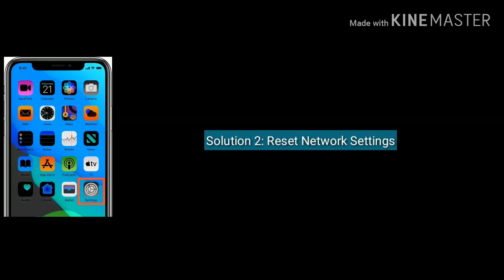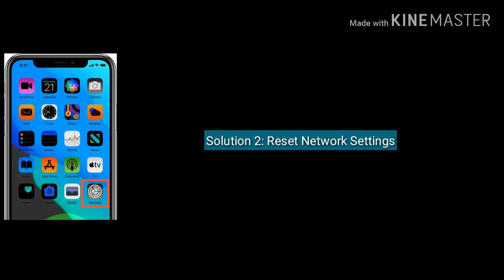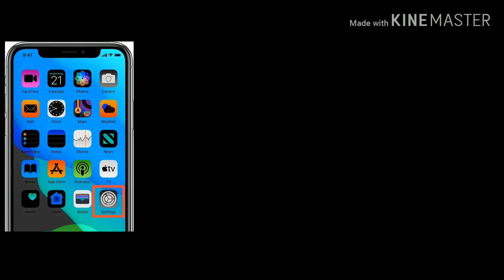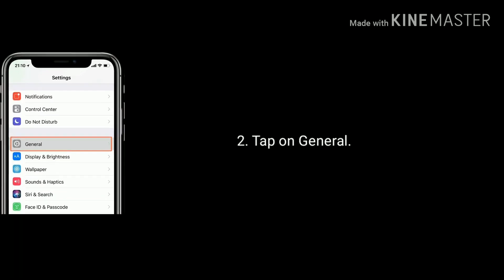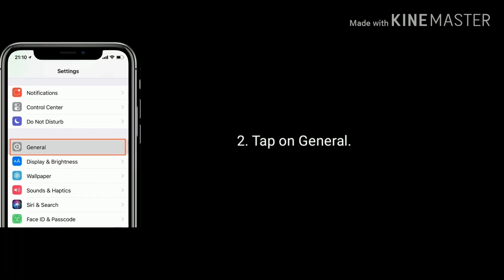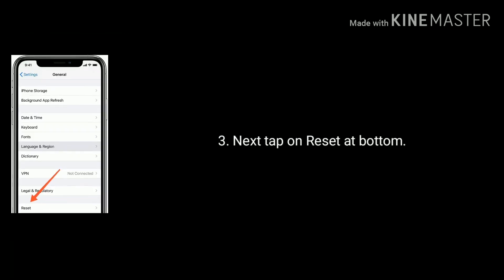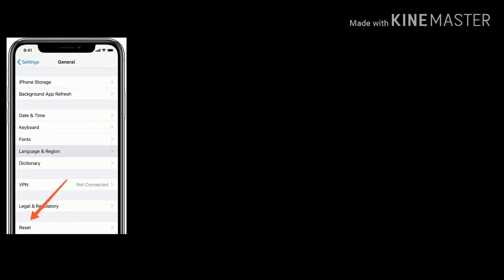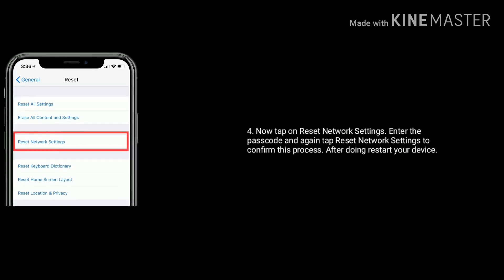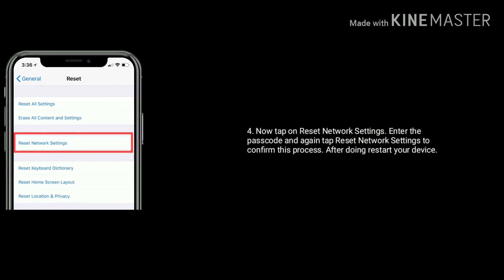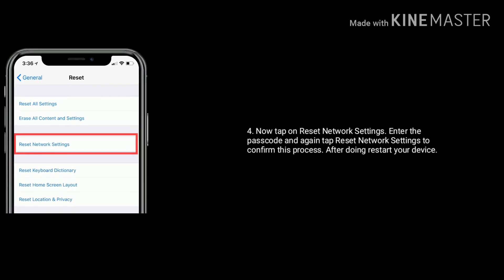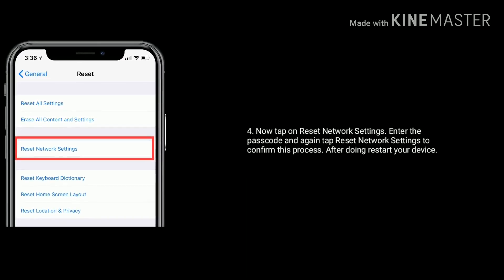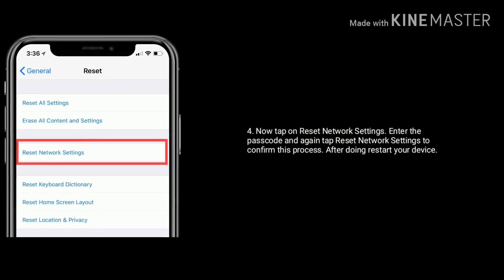Solution 2 is reset network settings. For that, first go to Settings on your iPhone. Tap on General, then tap on Reset at the bottom of the screen. Now tap on Reset Network Settings and enter the passcode, then tap Reset Network Settings again to confirm. After doing this, restart your device.